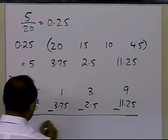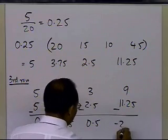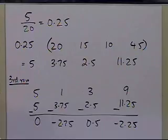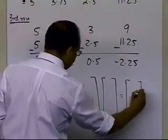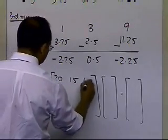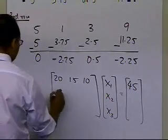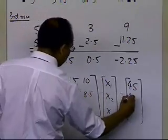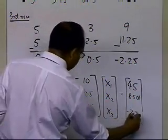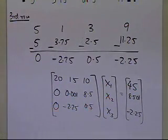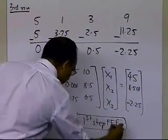After subtracting, the new third row is: 0, -2.75, 0.5, and -2.25. So at the end of the first step of forward elimination, the matrix is: row 1 unchanged as 20, 15, 10 | 45; row 2 becomes 0, 0.001, 8.5 | 8.501; and row 3 becomes 0, -2.75, 0.5 | -2.25. That is the end of the first step of forward elimination.